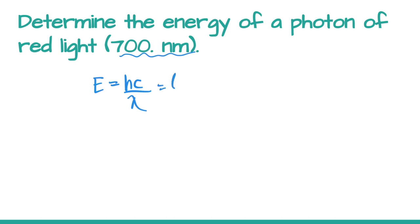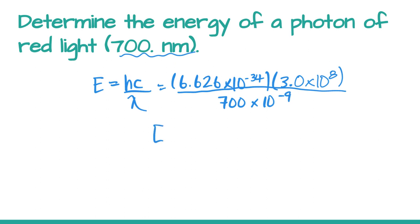If we plug in our values, Max Planck's constant is 6.626 times 10 to the negative 34, speed of light is 3.0 times 10 to the 8, and our wavelength is 700 nanometers. We have to change that into meters first, so we multiply by 10 to the negative 9.